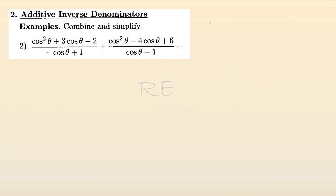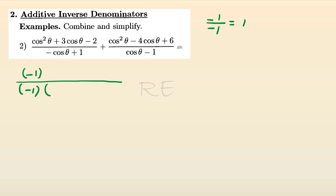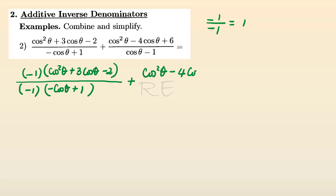We have a similar situation for example 2. We know that negative 1 over negative 1 is positive 1. Therefore, we're going to multiply the numerator by negative 1 and the denominator by negative 1: negative 1 times negative cosine theta plus 1, and negative 1 times cosine squared theta plus 3 cosine theta minus 2. We keep the second expression the same: cosine squared theta minus cosine theta plus 6, divided by cosine theta minus 1.